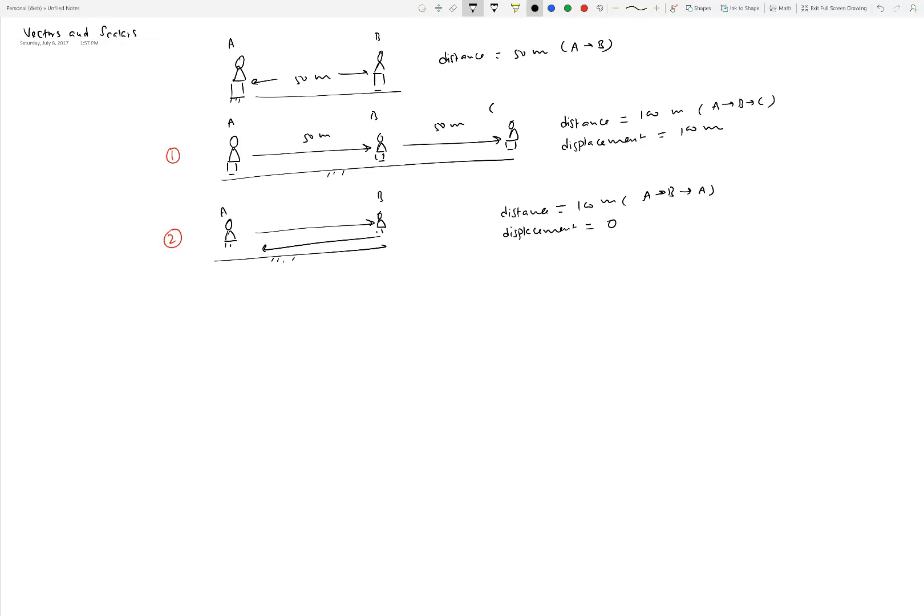In engineering we define these differently. Distance is a scalar quantity but displacement is not. Scalar quantities are defined by a single number, called magnitude. Examples: mass of 50 kilograms, area of 2 meters squared, volume of 5 meters cubed.